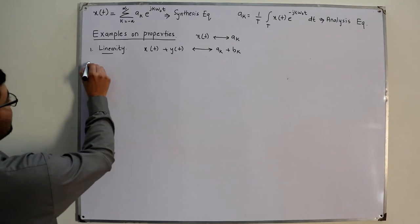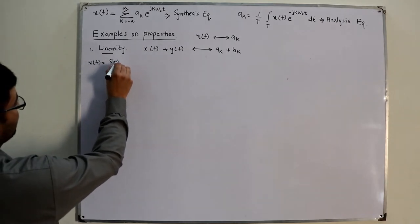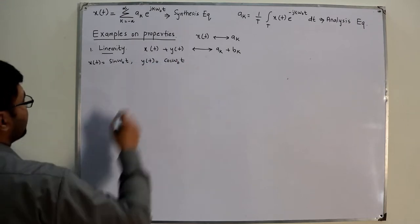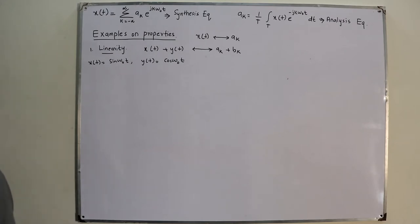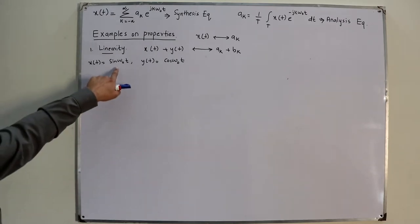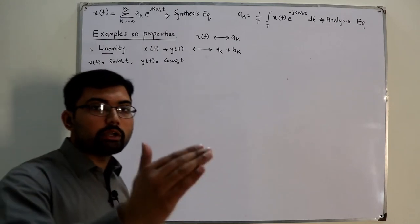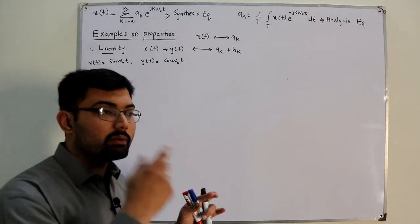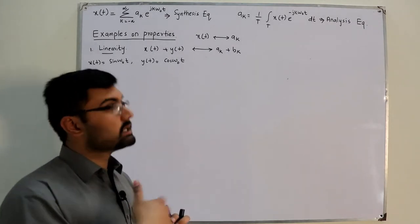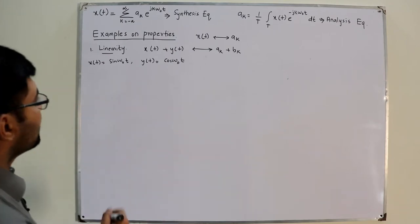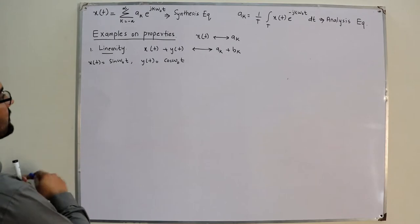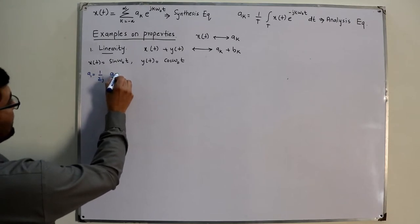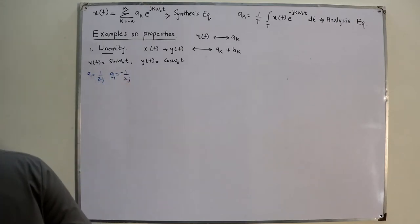Let's say x(t) is sine(ω₀t) and y(t) is cos(ω₀t), where ω₀ is the fundamental frequency. So x(t) + y(t) gives sine(ω₀t) + cos(ω₀t). The properties tell you to simply add them together. For sine(ω₀t), we have a₁ = 1/(2j) and a₋₁ = -1/(2j).